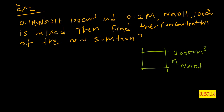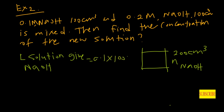We are going to find the number of moles of NaOH in the new solution. The first solution contributes 0.1 M × 100 × 10⁻³, which equals 10 × 10⁻³ moles of NaOH.